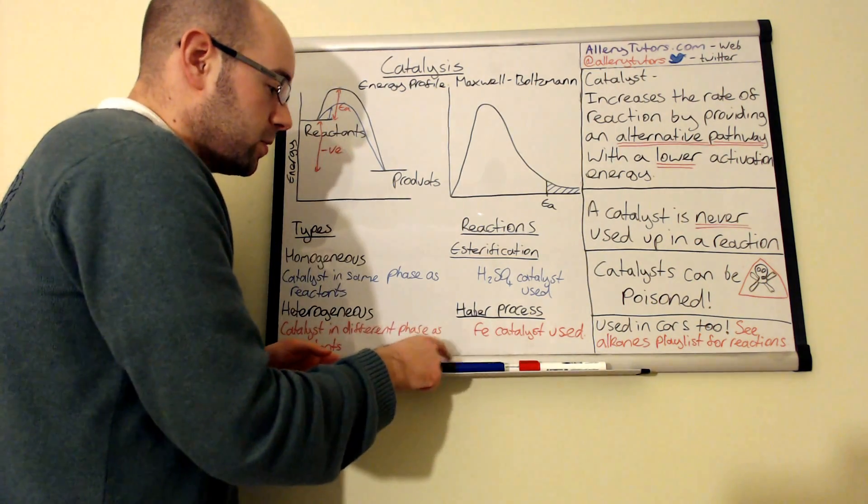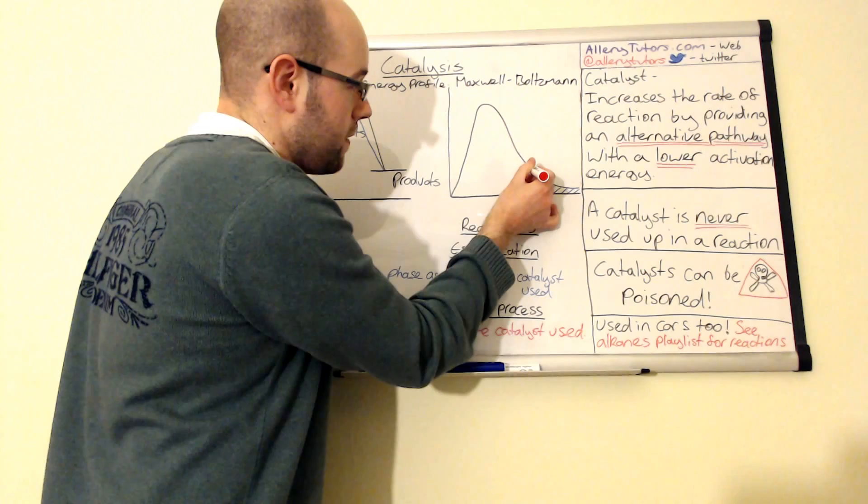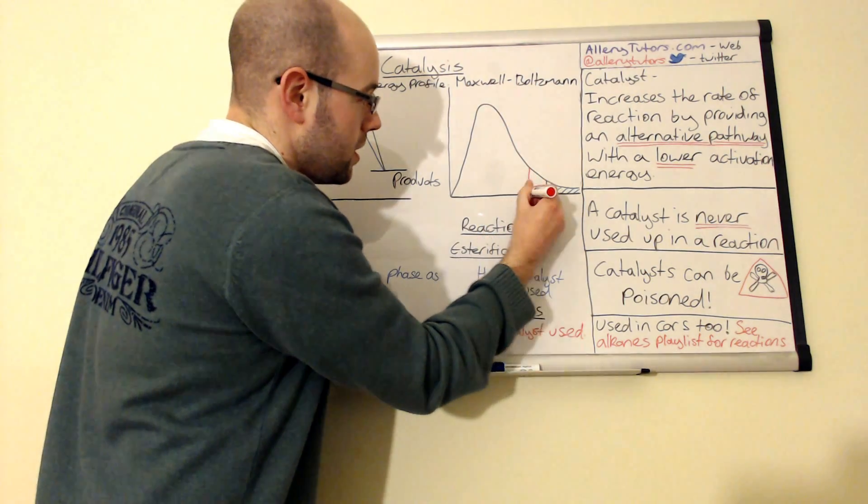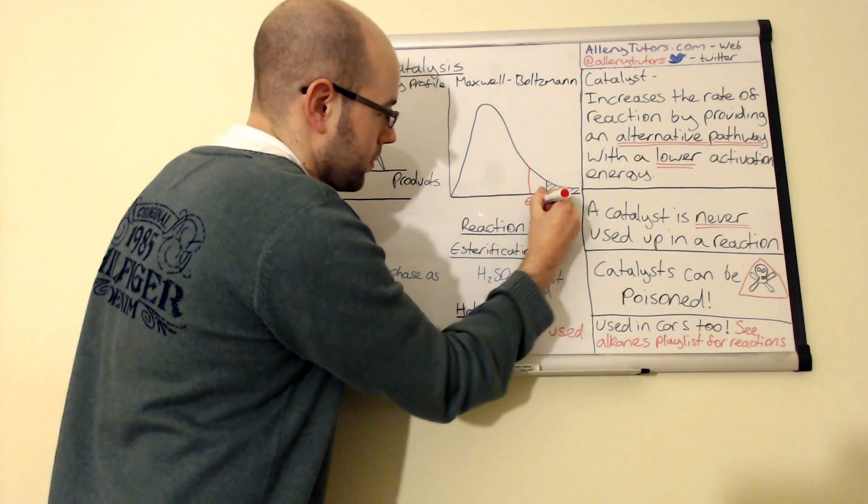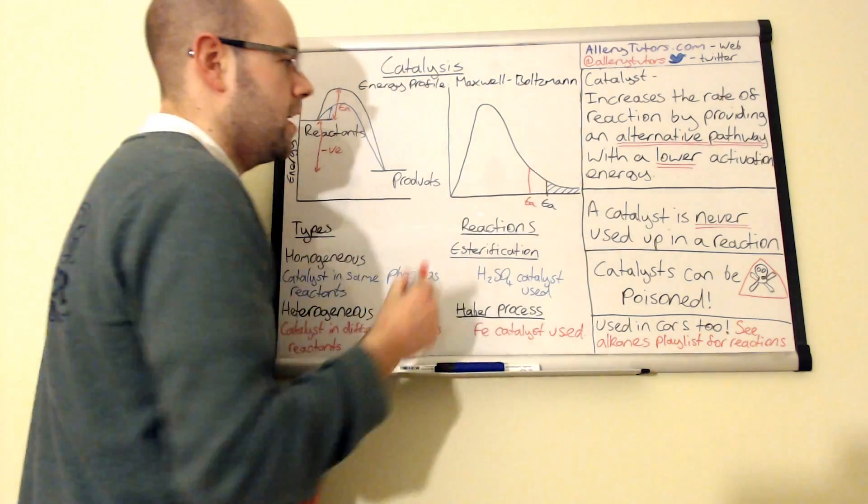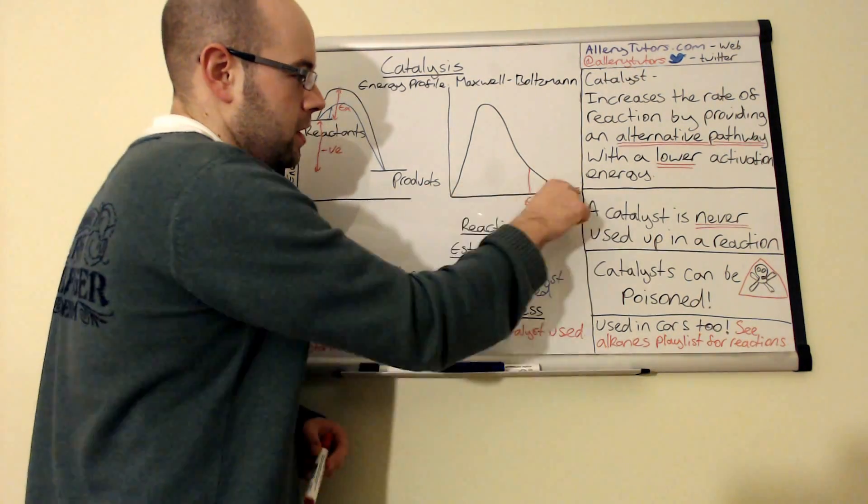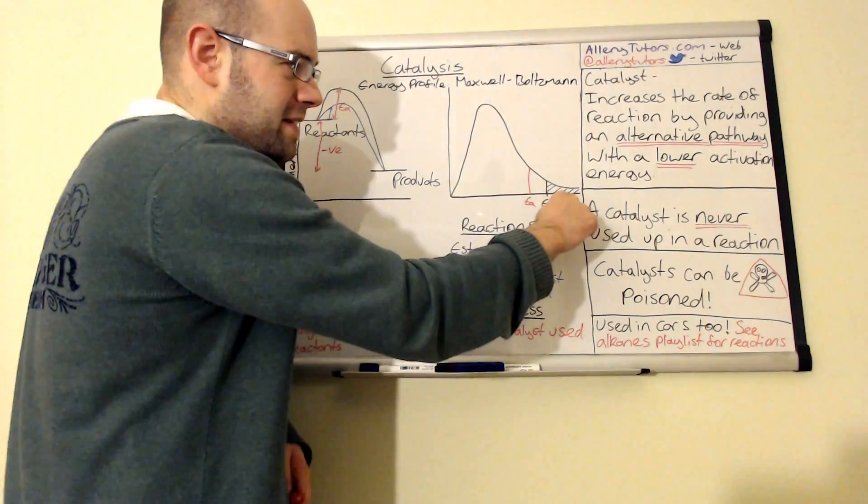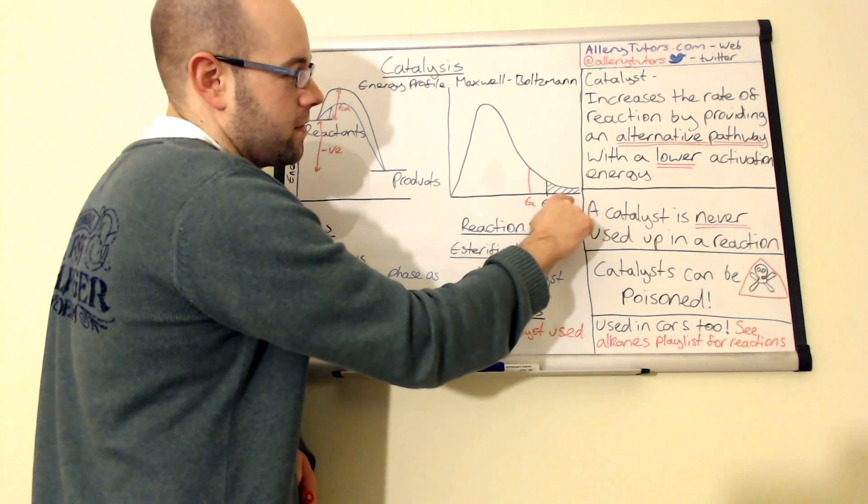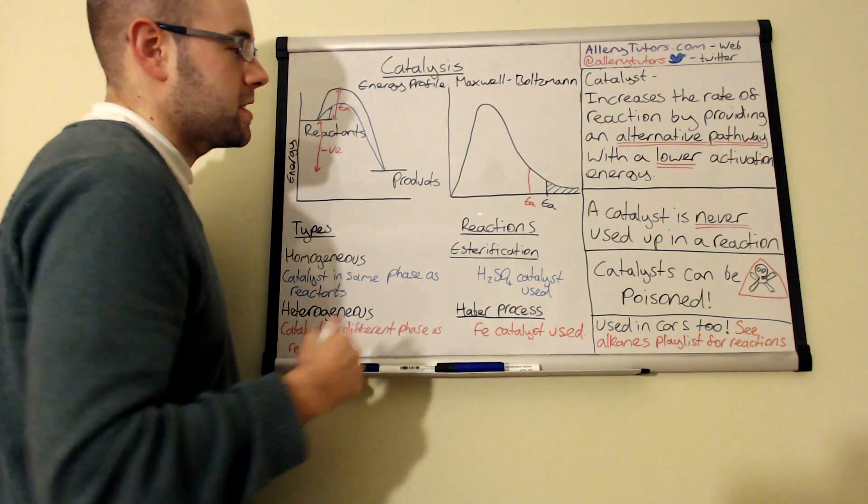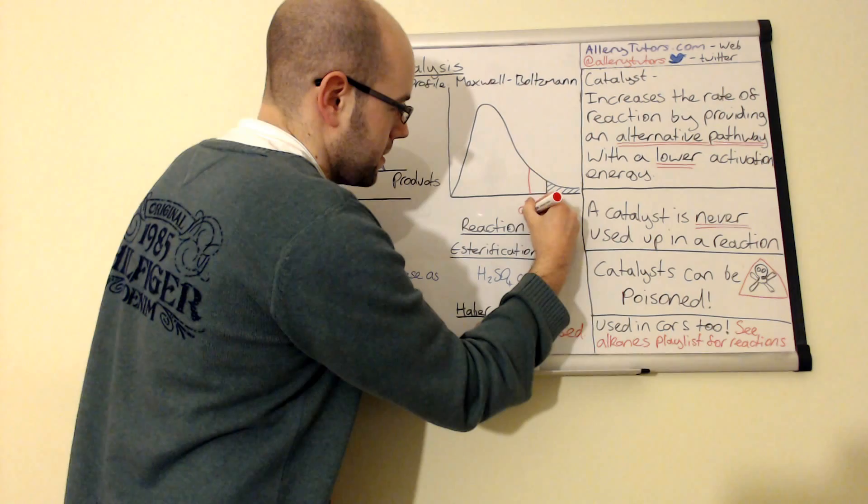On a Maxwell-Boltzmann curve, using a catalyst would actually shift the activation energy to a lower energy level. The energy is on the x-axis at the bottom here—this is higher energy. You can see that by adding a catalyst, this is the activation energy with a catalyst in.